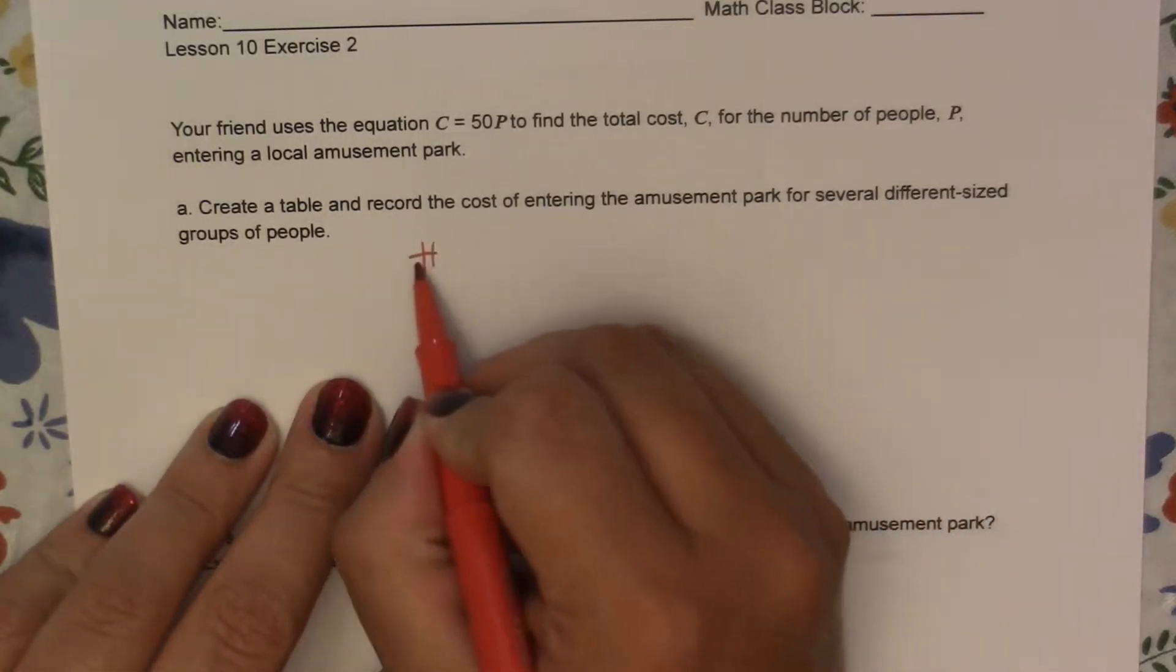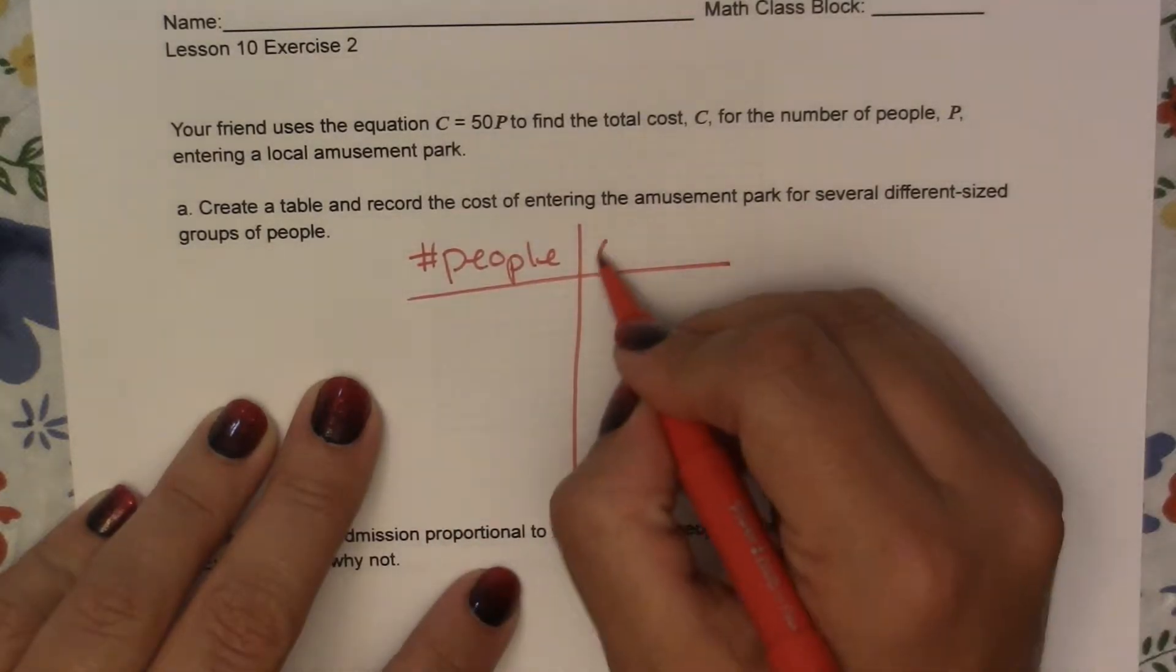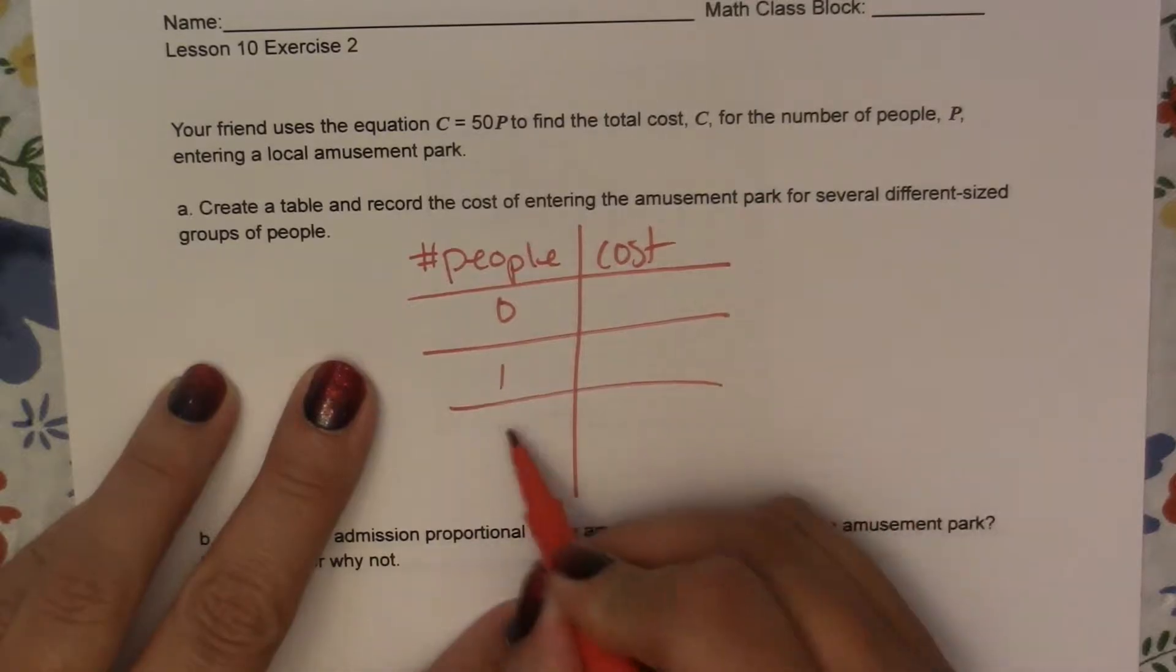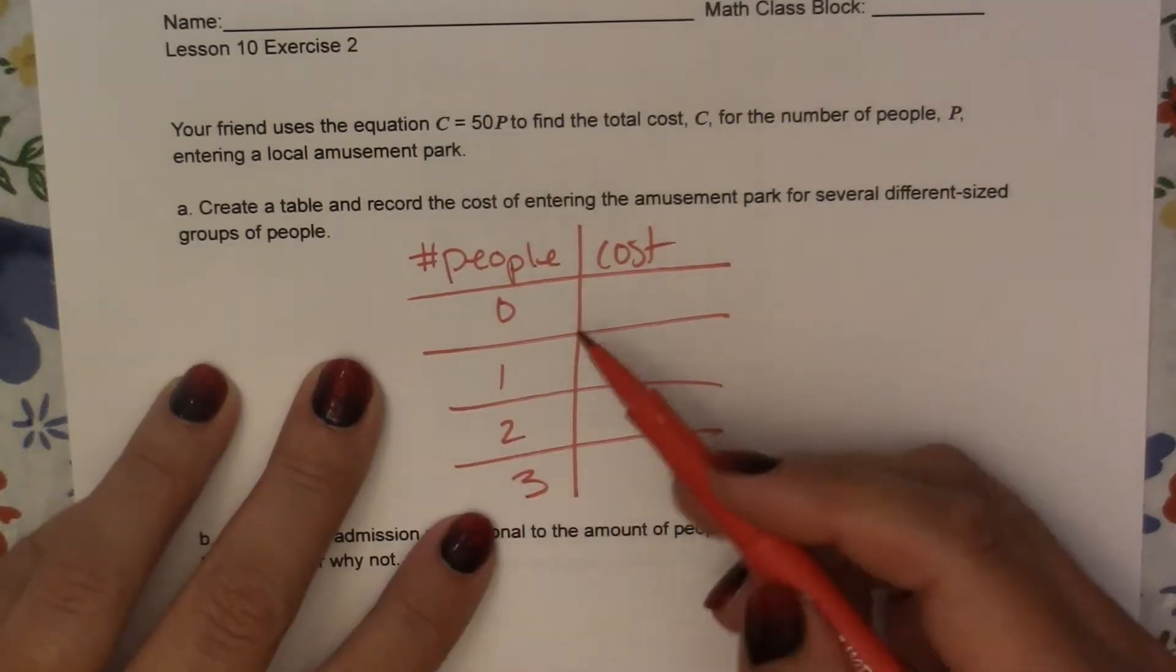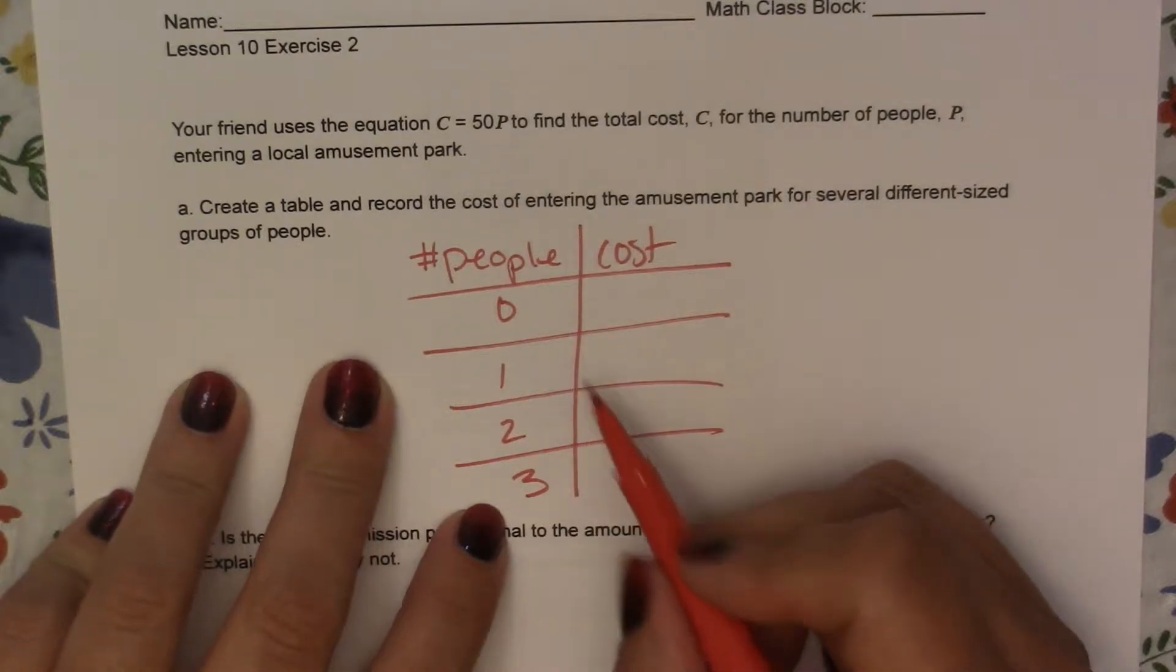So I'm going to do number of people, and then I'm going to find the cost. So 0, 1, 2, 3. You could do 0, 10, 20, 30. You could go 5, 10, 15. However you want to do it is fine.